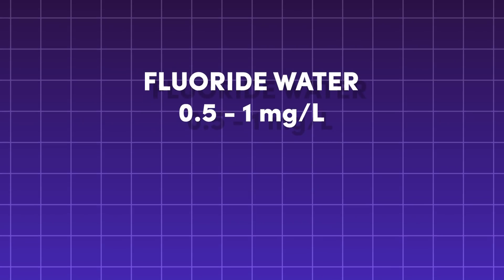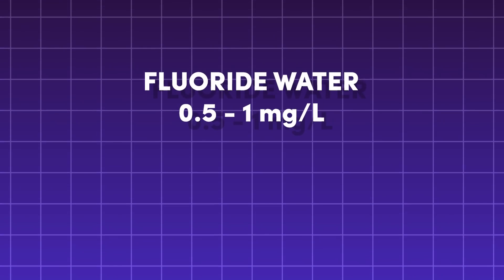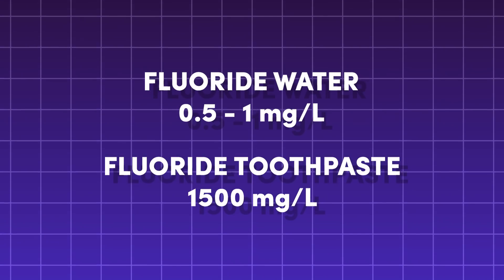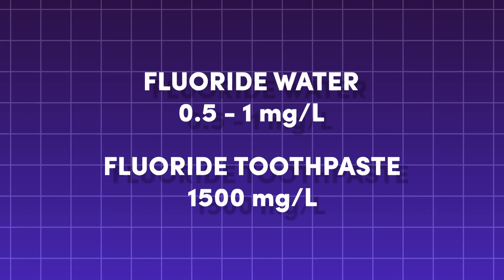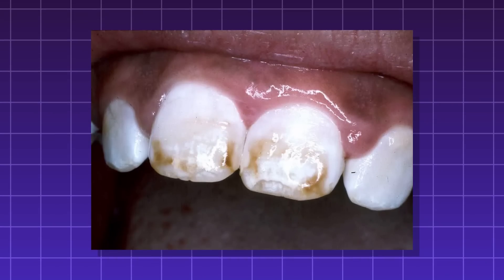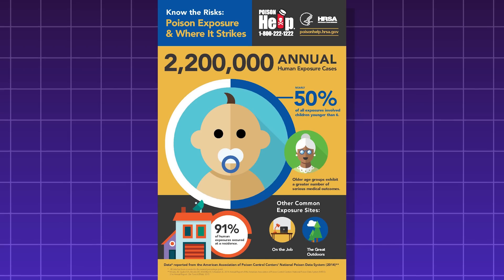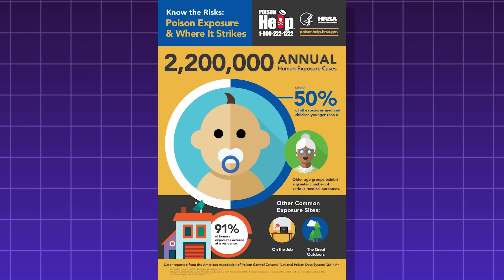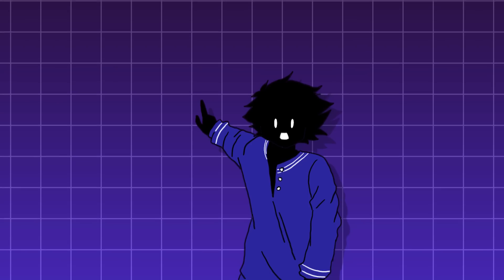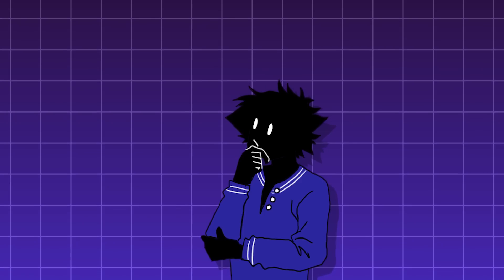So what about fluoride? Fluoride is currently regulated to be between 0.5 and 1 milligram per liter. Your average fluoride toothpaste contains 1,500 milligrams per liter, and even that amount is not enough to cause serious injury. It is enough to cause fluorosis, but that's only if you eat the entire tube in one sitting. Most poisoning reports of fluoride toothpaste are usually upset stomach or nausea, and it's usually done by toddlers who think toothpaste is good to eat. Real serious harm is usually seen when you consume this amount of fluoride for an extended period of time, usually months.